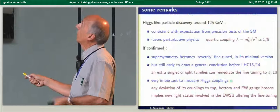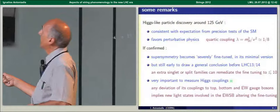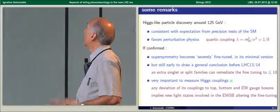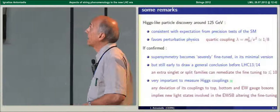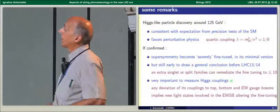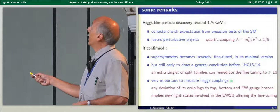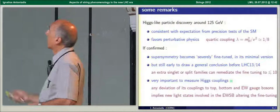If this discovery is confirmed that it is the Higgs of the standard model, then obviously supersymmetry becomes severely fine-tuned in its minimal version, as Savas discussed already. But it also could be that this points out that supersymmetry, if it is realized, is realized in a non-minimal version, for instance by adding a singlet or by splitting the two families from the third one, the partners, or by introducing extra U(1)s. This could easily remediate the fine-tuning to acceptable rates.